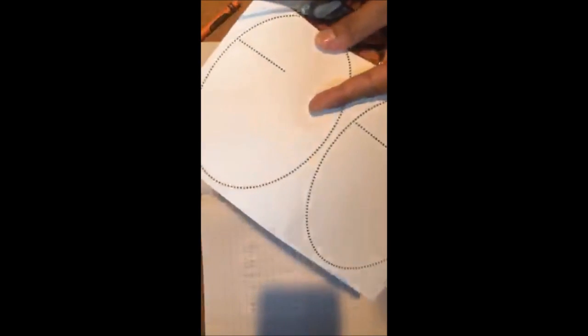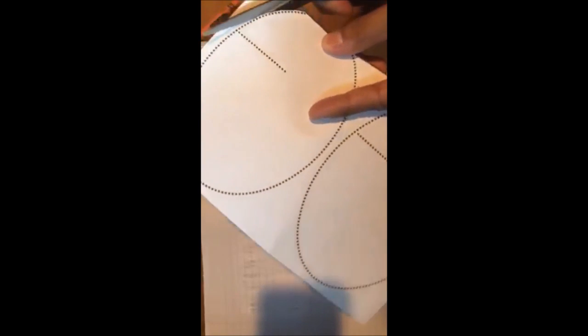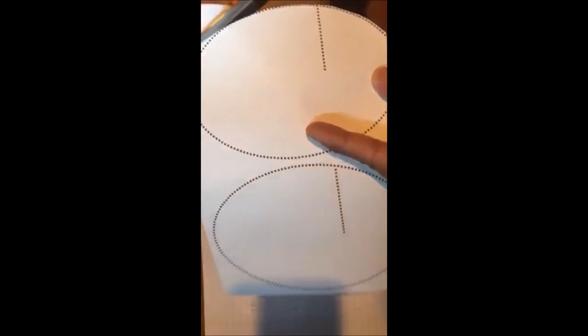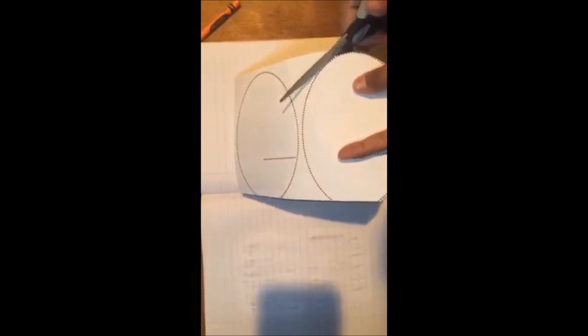The first thing you need to do is fold it in half along this dark black line. I'm going to go ahead and cut out these circles. I tried to use pretty simple shapes so they were fairly easy for the students to cut out.